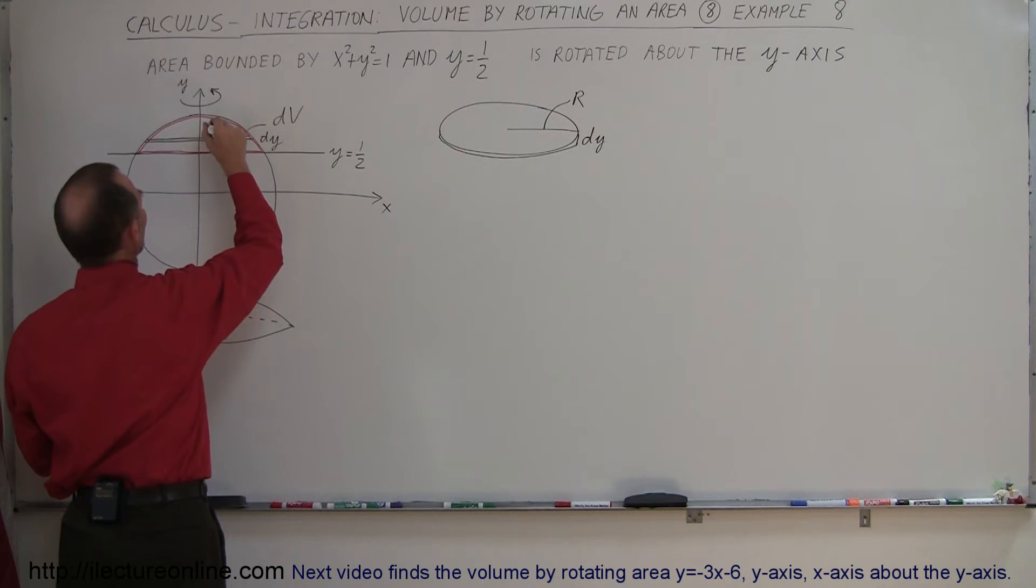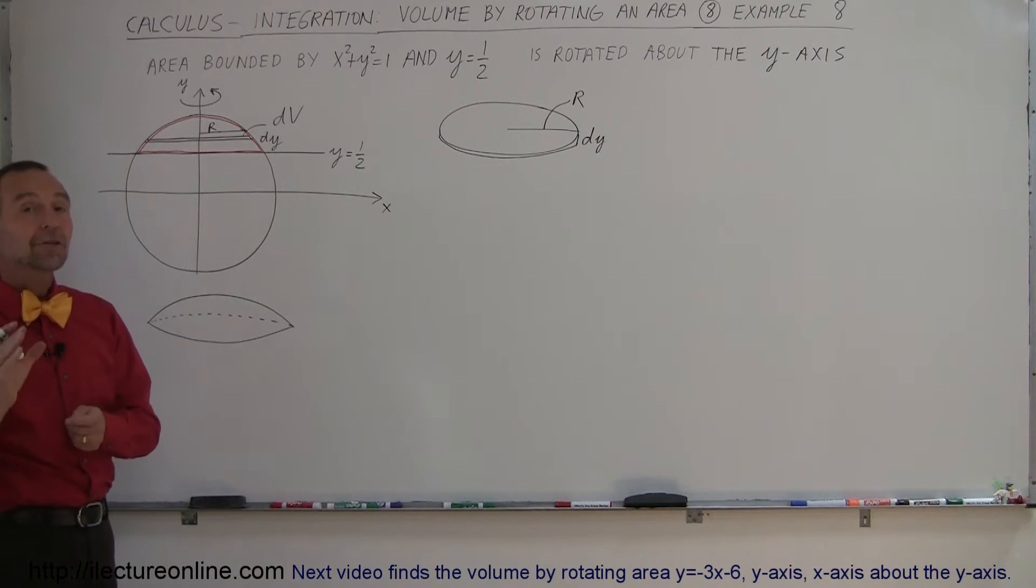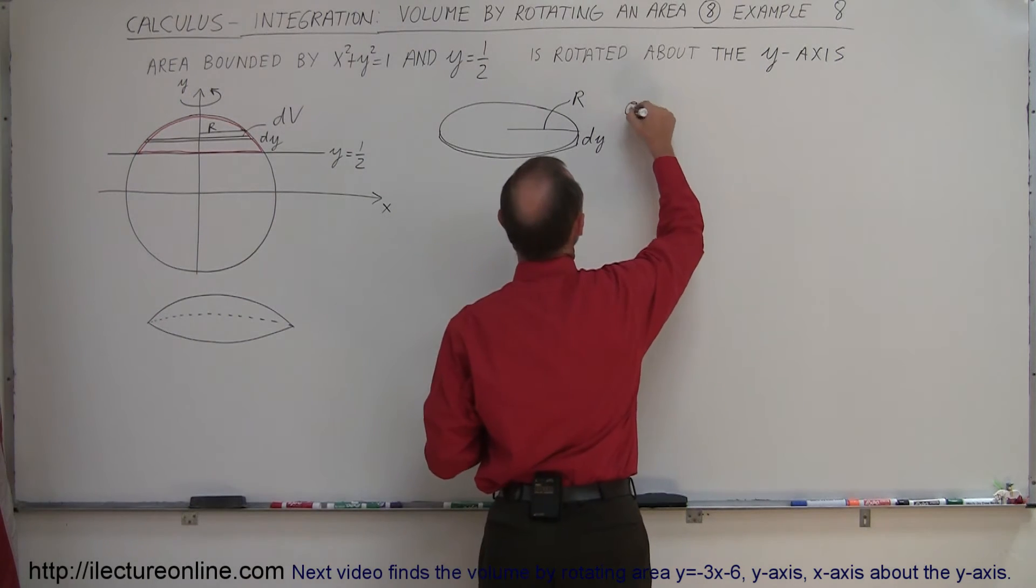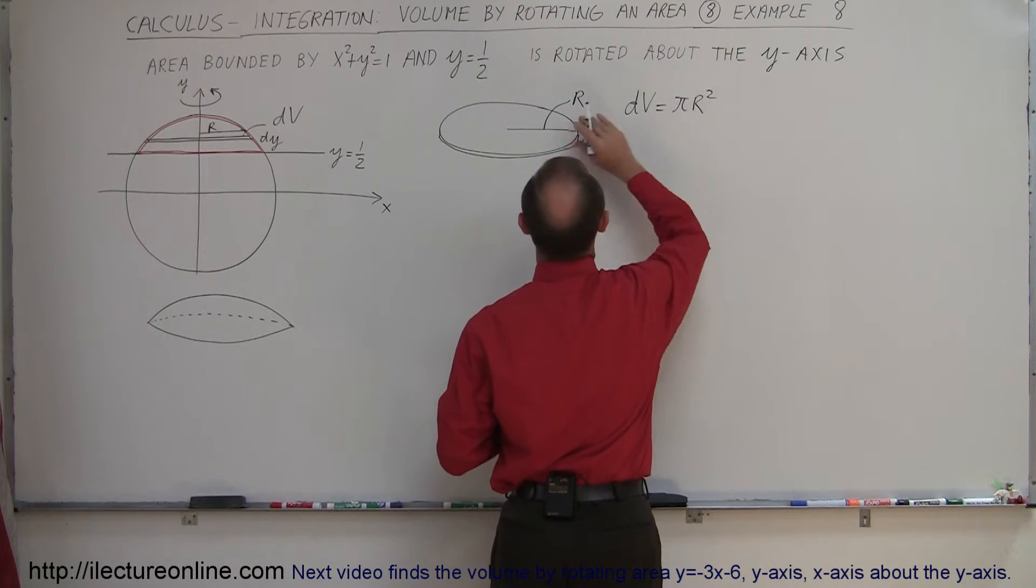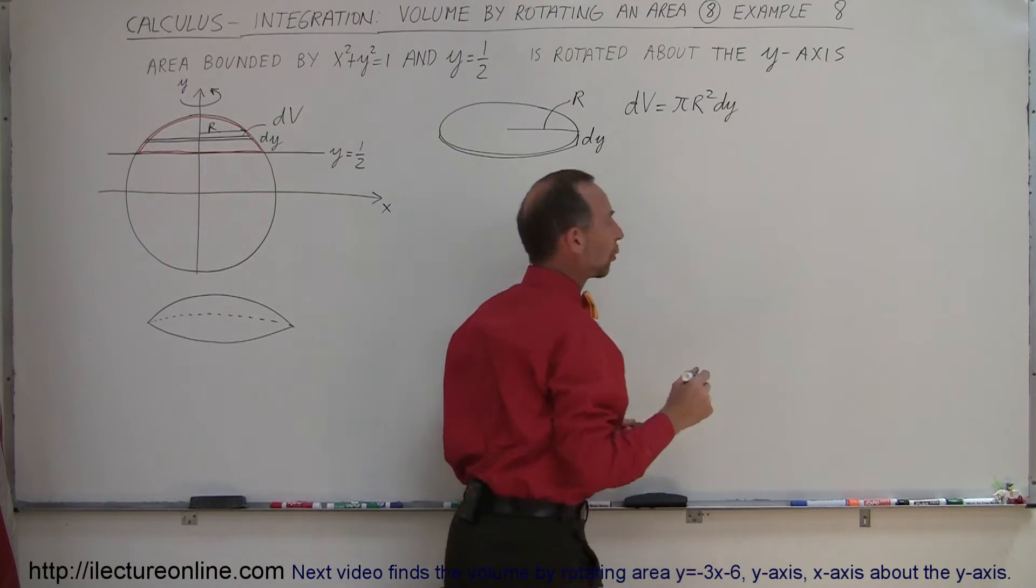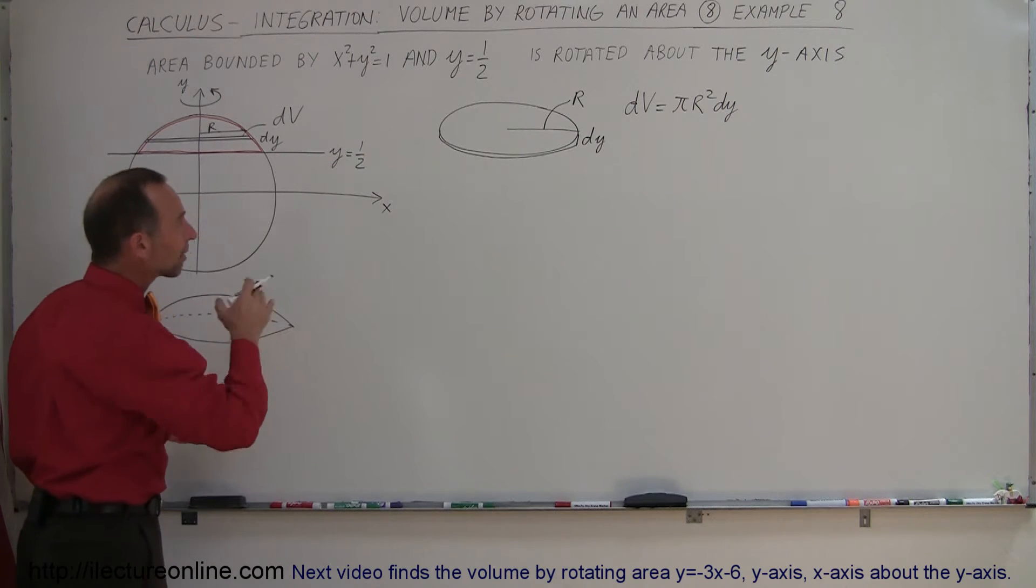The R, the radius, would be this distance right there from the Y axis out to the edge of that disc. Now we want to define the volume of that small little volume segment dV, and the volume would be equal to pi R squared, which would be the area of this disc, times the thickness dy. Of course, R and Y are not the same variables, so now we have to convert R into X and Y variables.